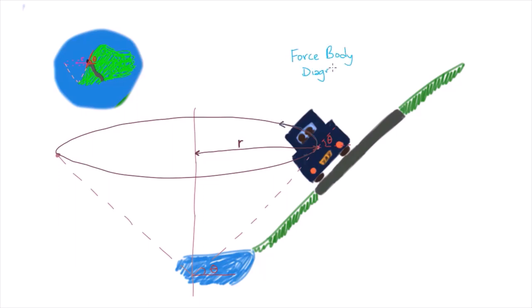So what forces are acting on the car? Well, there's gravity pointing downwards, of course, and there will be a normal force applied by the track on the car. This normal force points perpendicularly to the surface like any normal force. Since there's no friction, that's it, those are all the forces acting on the car.